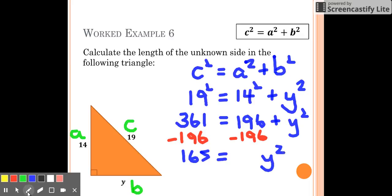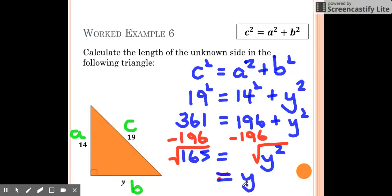Now I want Y on its own, so just like before we'll have to square root it. If I square root that side, I'm going to have to square root this side. That's going to leave me with Y on this side, and now I have to find out the square root of 165, which I don't know off the top of my head.